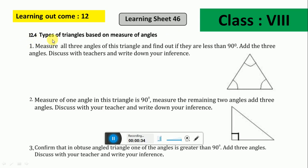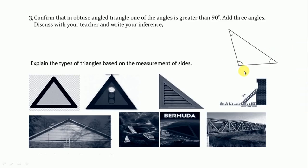Here 12.4 is type of triangle based on measure of angles. The first triangle — all angles are less than 90 degrees — is called an acute angle triangle. Next, in this triangle one angle is 90 degrees, so we call it a right angle triangle. Next, in this triangle one angle is more than 90 degrees, so we call it an obtuse angle triangle.